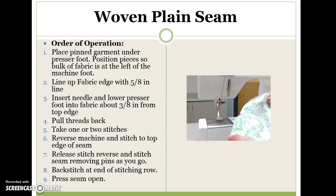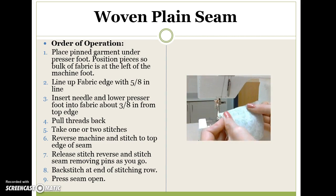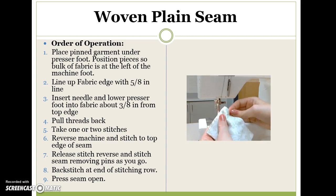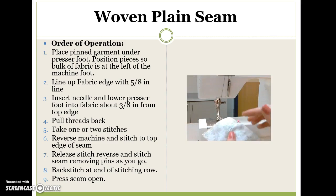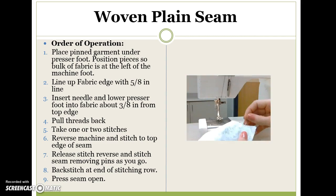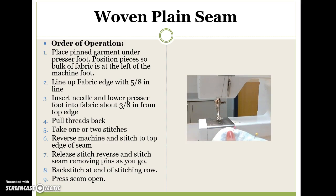Once you have your two 3x4 pieces, you are going to match up the raw edge. Take two pins and stick them in the seam allowance and come out on the other side. The seam allowance is the area from the seam to the raw edge of the fabric. This is often times hidden — you usually do not see the seam allowance in projects.